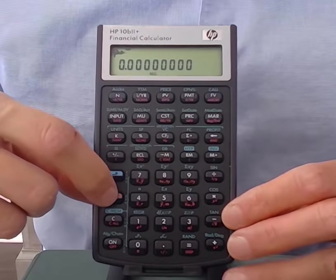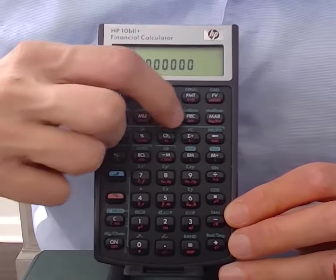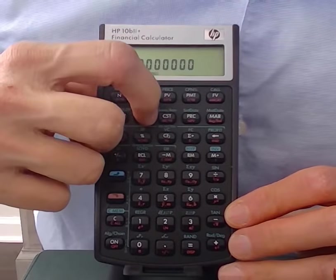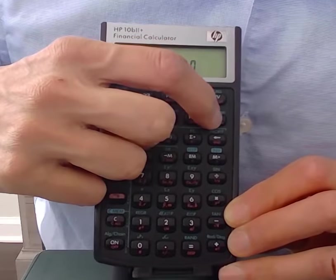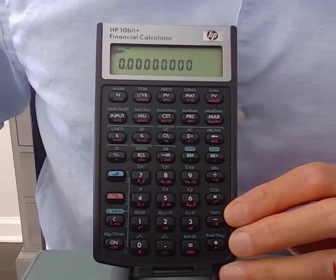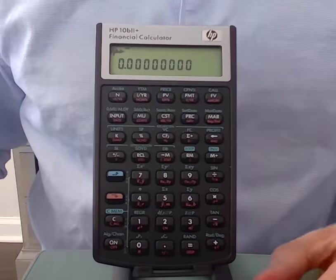So to set it to end, I'm going to do the shift and then hit the BEG slash end button, which is over here. And then we see the BEG letters go away.